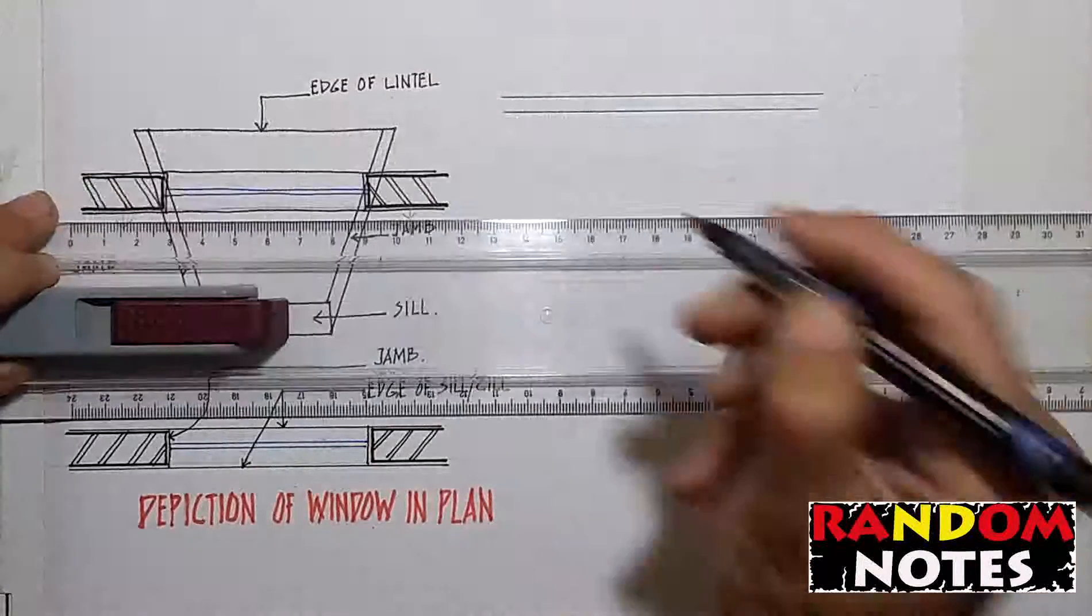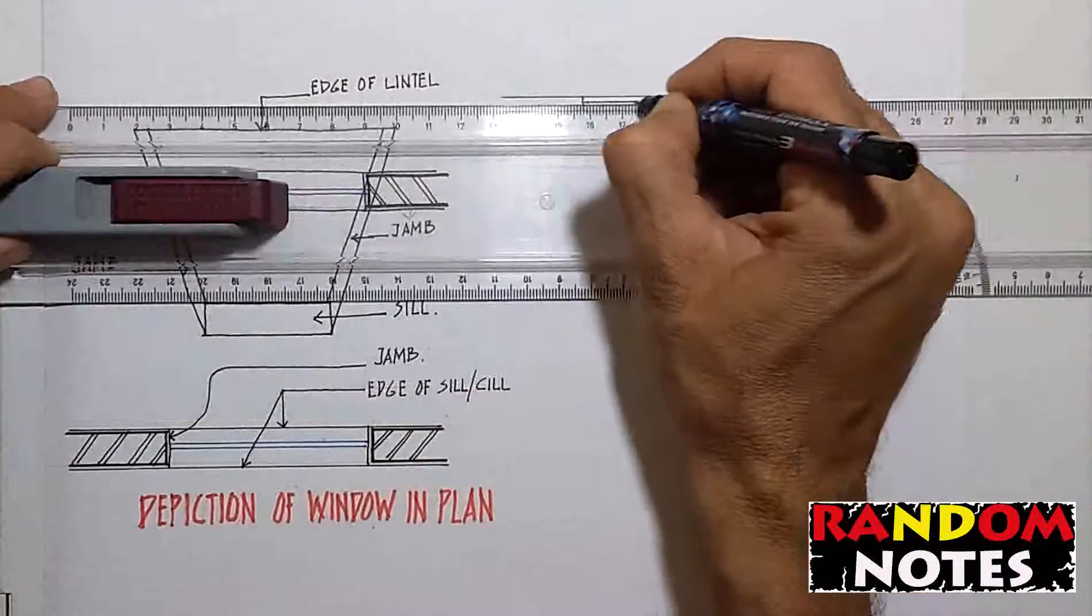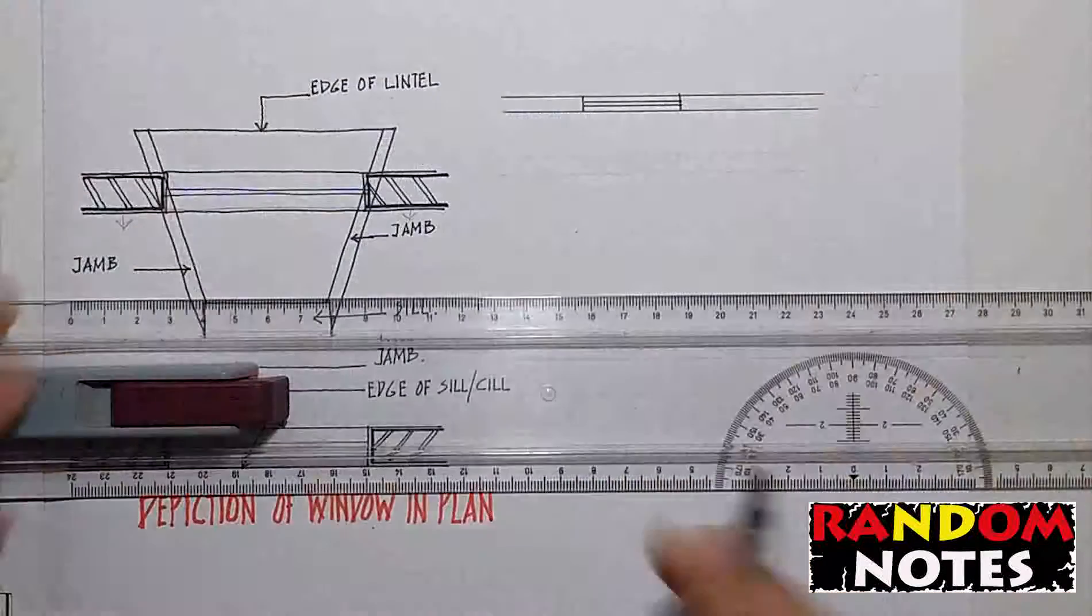The plaster line is drawn depending on the scale of a drawing. In this case, we are not drawing the plaster line.